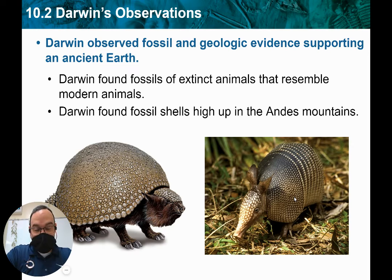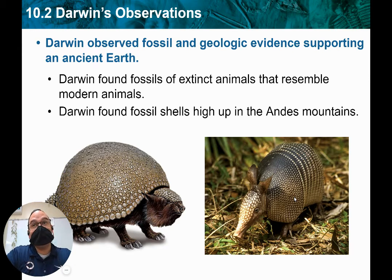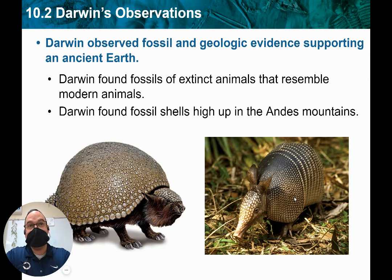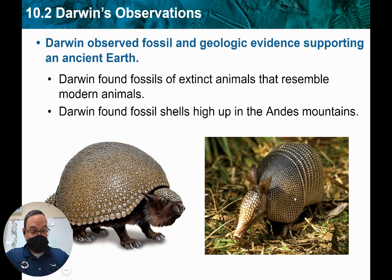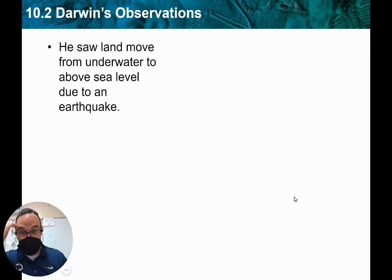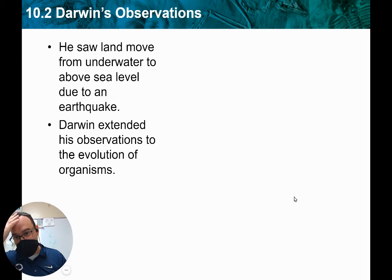He also found something hard to explain: seashells — ocean shells — on top of the Andes Mountains. Not just a couple of shells, but lots and lots of them. The question became, how does a shell end up on top of the Andes Mountains? The best theory had to be that that part of the Andes Mountains used to be underwater, and now it's not. He also saw some land move underwater because of earthquakes.